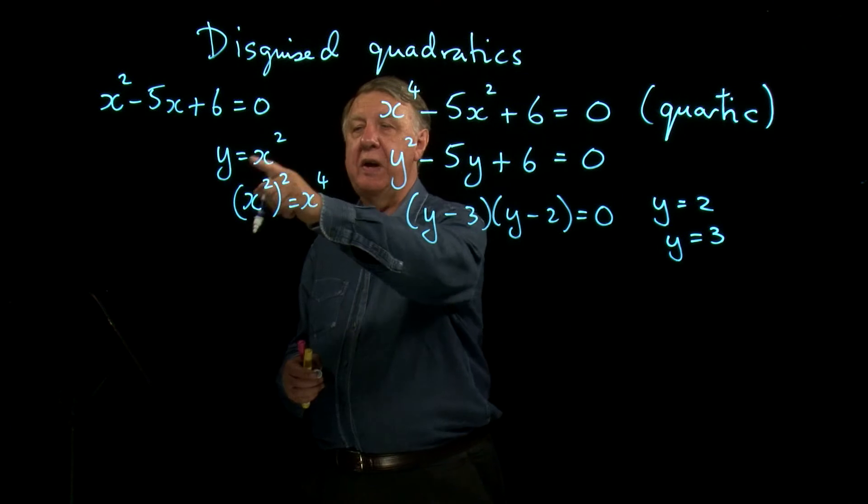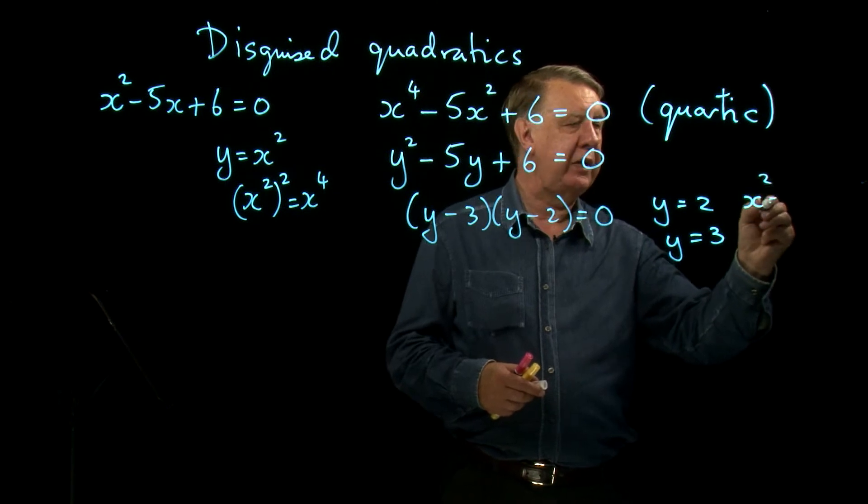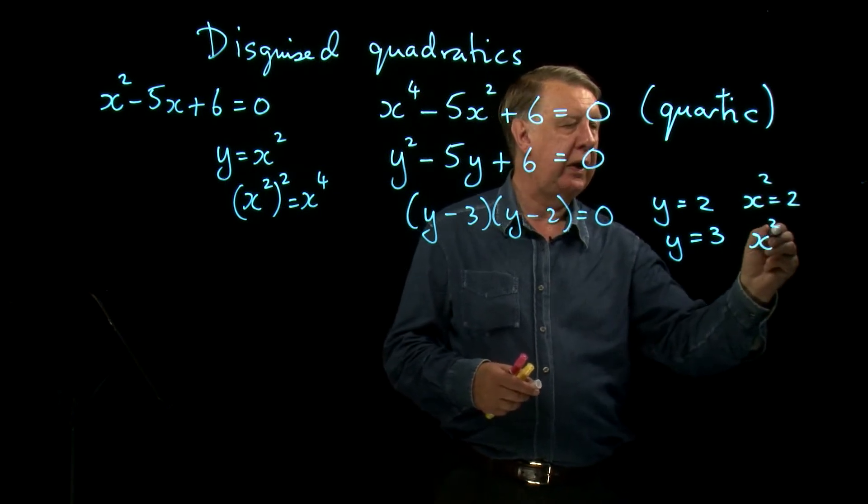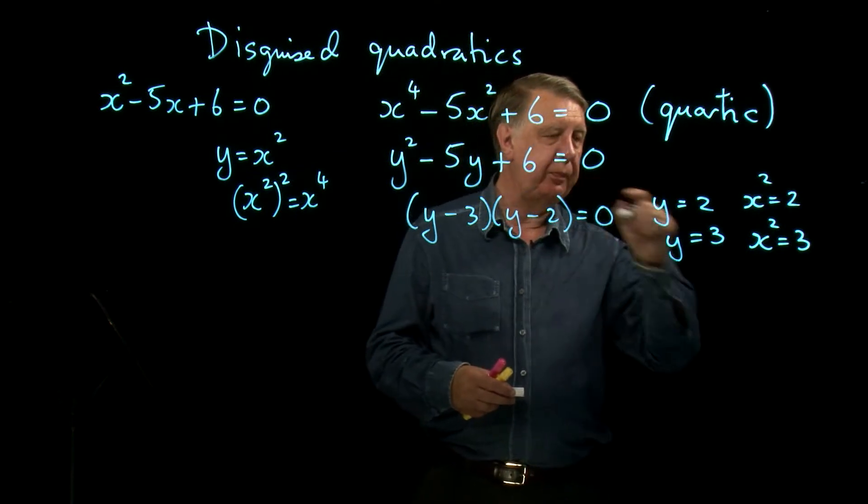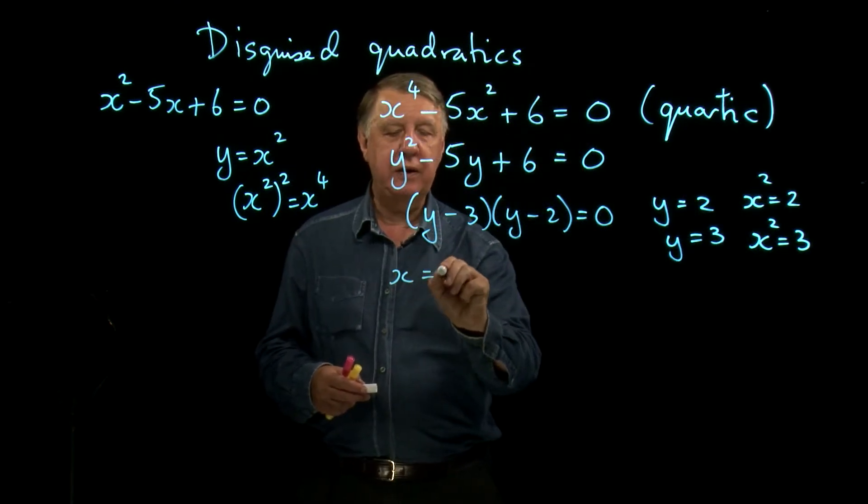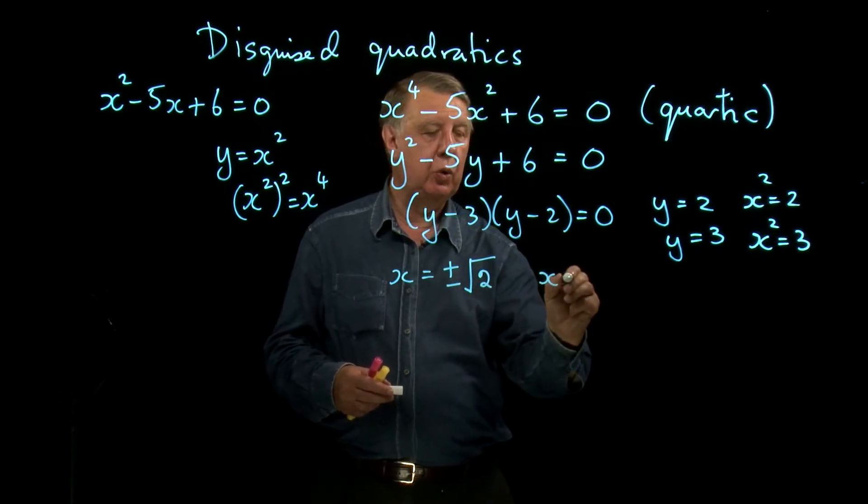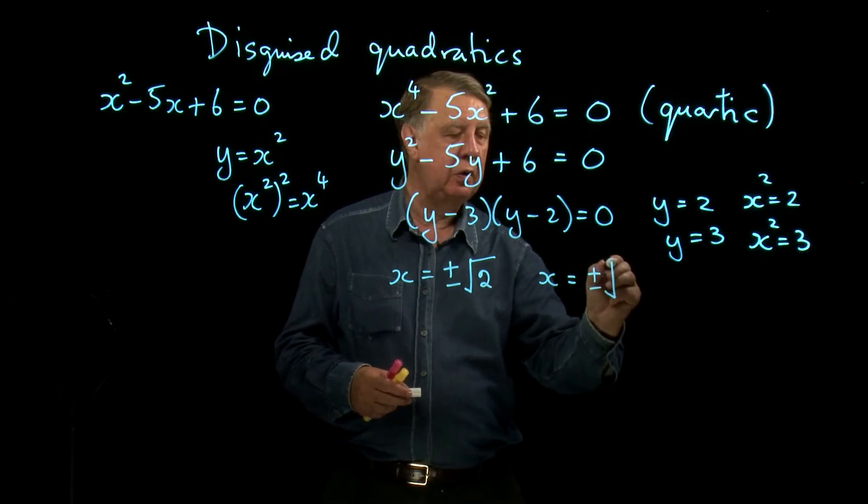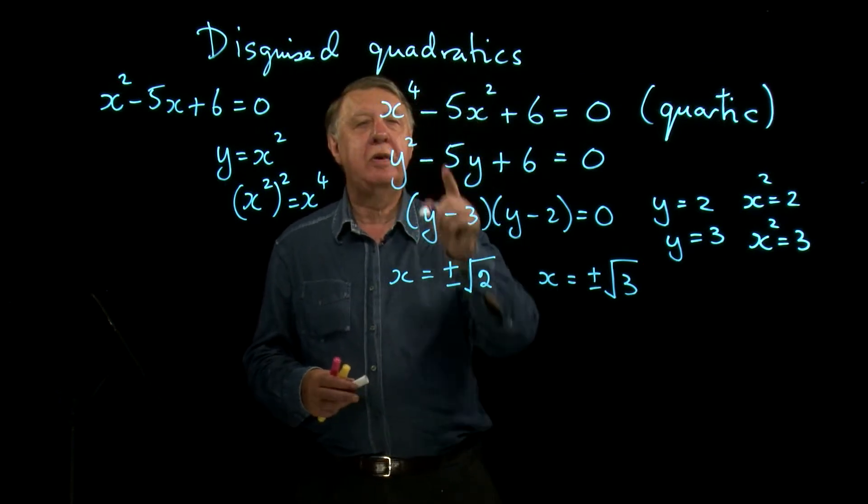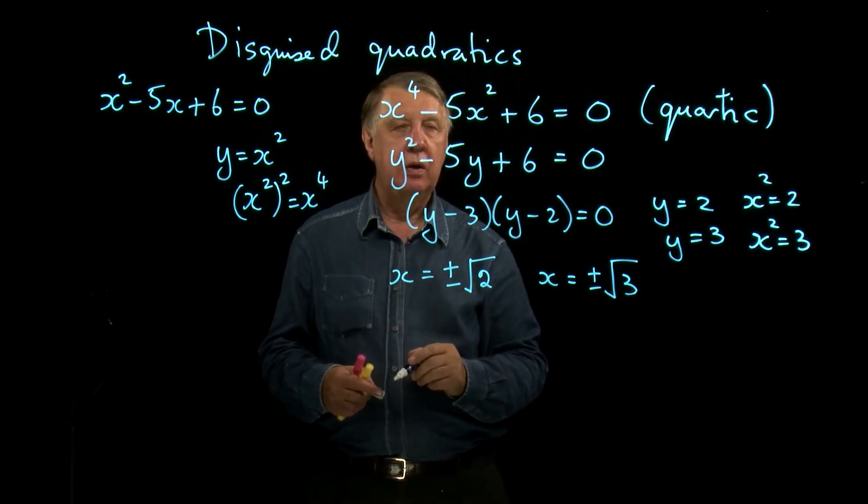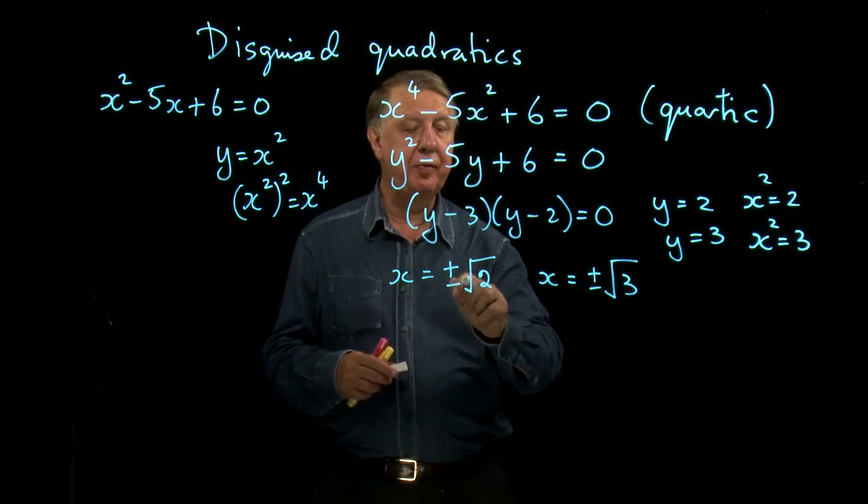Now, y is equal to x squared. So in fact, what we've really got here is either x squared equals 2 or x squared equals 3. So the solution of that is either x equals, don't forget the plus or minus, the square root of 2 or x equals plus or minus the square root of 3. In other words, our quartic equation, which is really a disguised quadratic, turns up and produces four solutions.